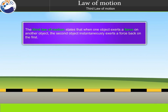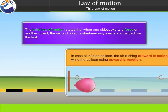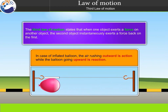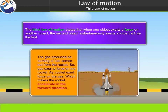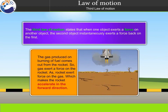Third law of motion: when one object exerts a force on another object, the second object instantaneously exerts a force back on the first. For an inflated balloon, the air rushing outward is the action while the balloon going upward is the reaction. For a rocket, gas produced by burning fuel comes out, exerting a force that makes the rocket accelerate in the forward direction.